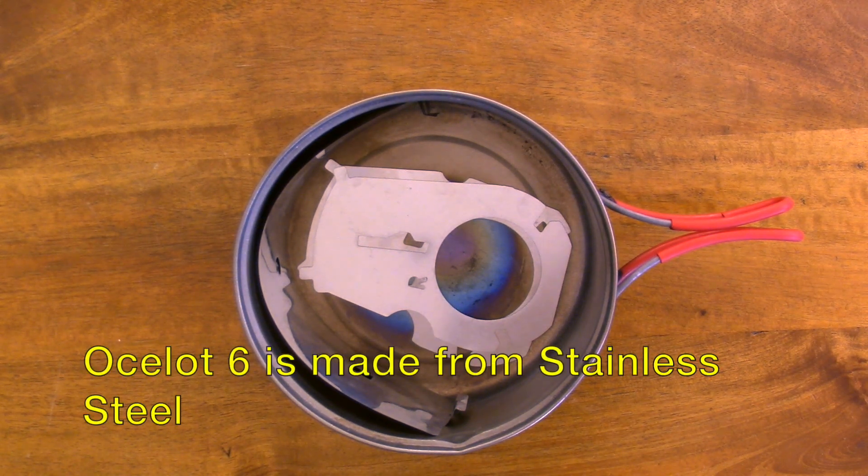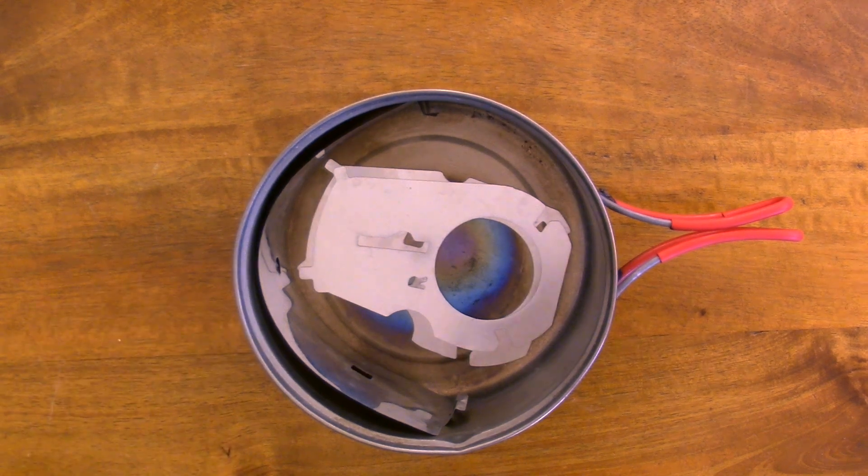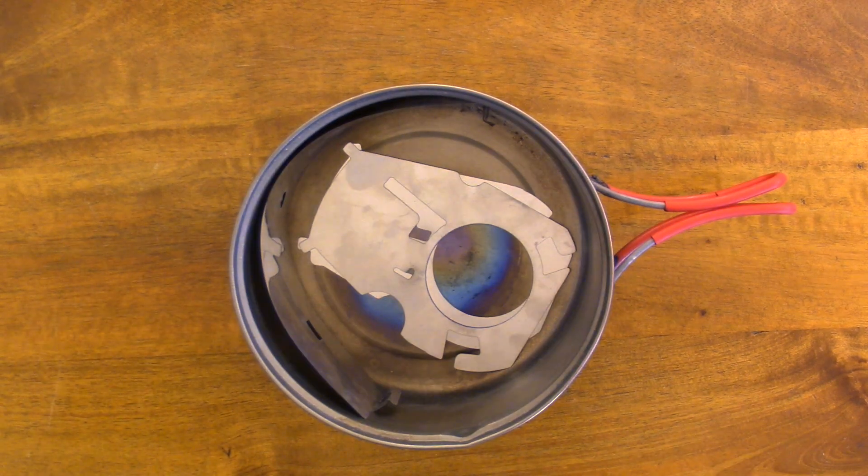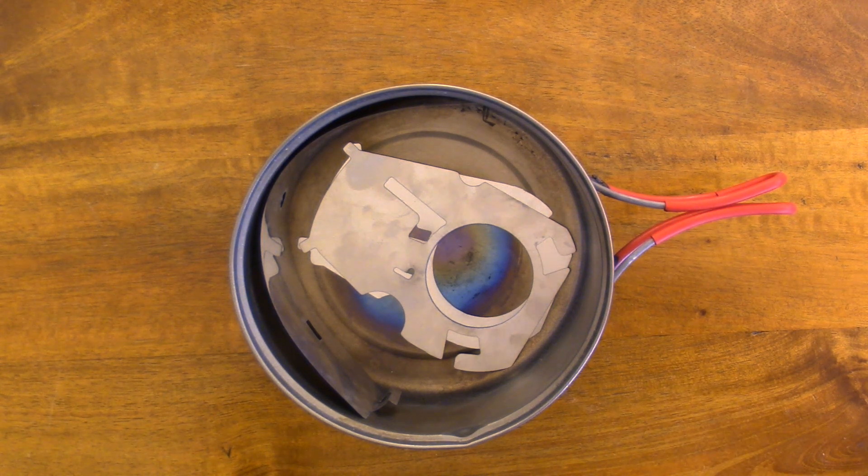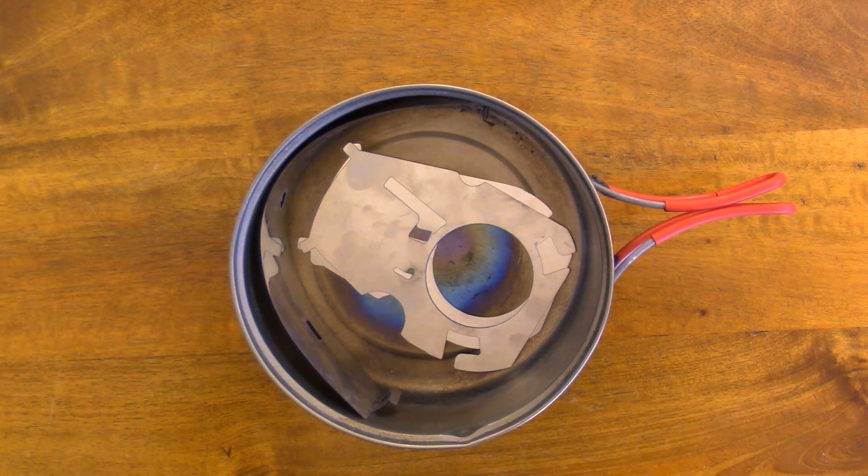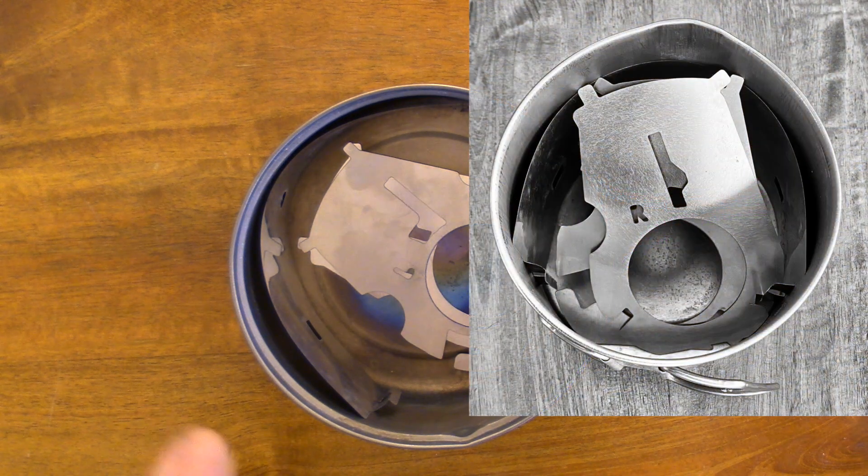This particular Ocelot 6 is for the Pocket Rocket Deluxe and while it's shown nested in the Evernue 1.3 liter pot it will also nest into mugs as small as the MSR Titan kettle shown here.